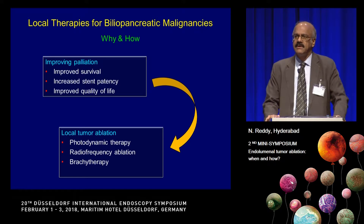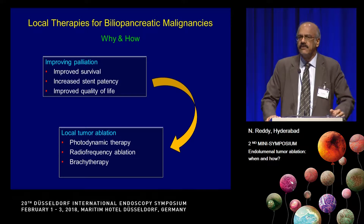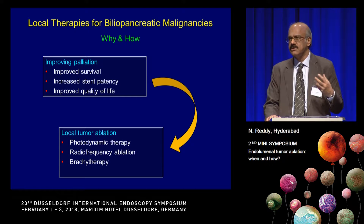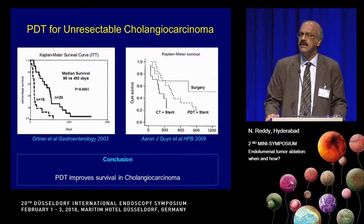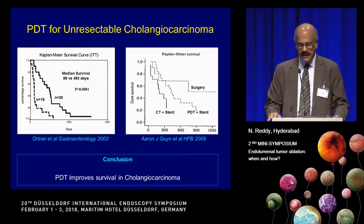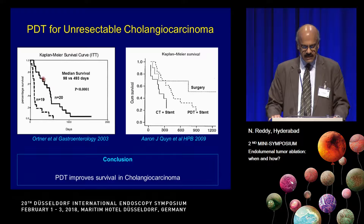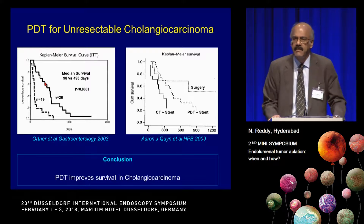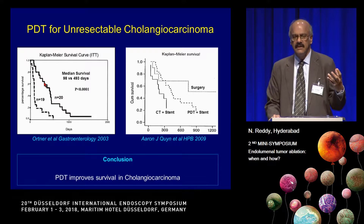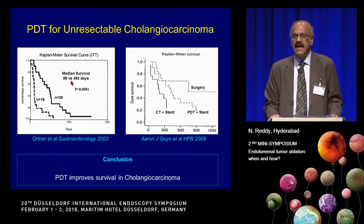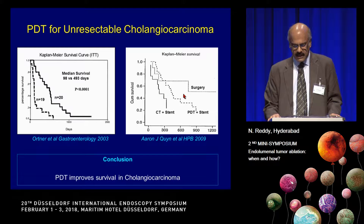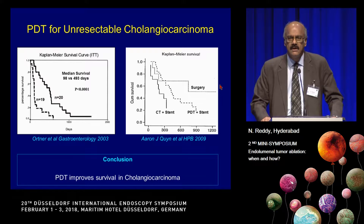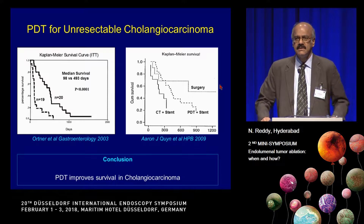You can do photodynamic therapy — there is the most evidence for this — or radiofrequency ablation, and there is also literature on brachytherapy, though most gastroenterologists don't perform it. Starting with PDT, two remarkable studies showed that it increased survival. Ortner's group from Germany showed very early on that PDT prolonged survival; they had to stop the study because it was unethical to continue. A similar study from Scotland confirmed this, and since then several studies have shown that PDT can actually prolong life.